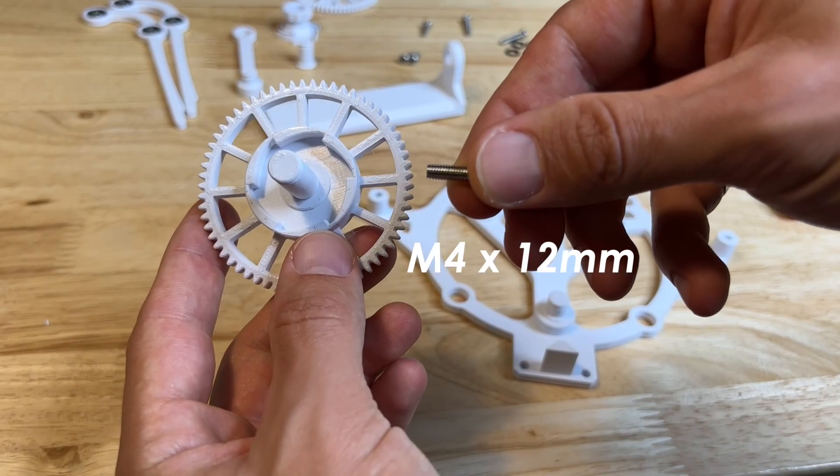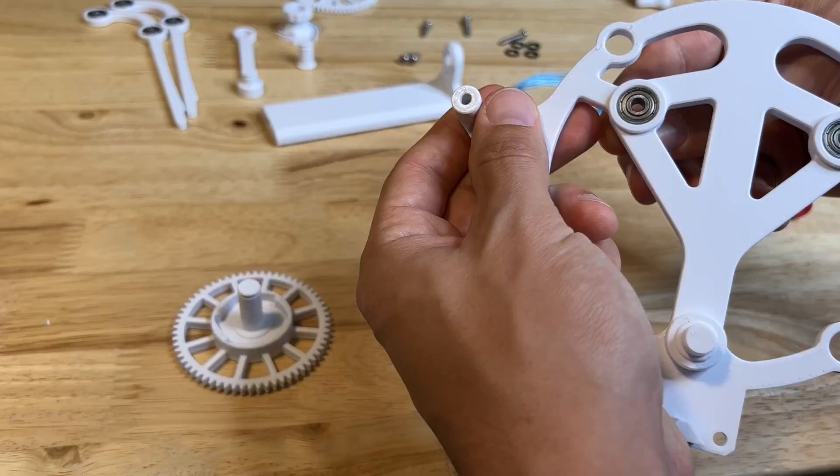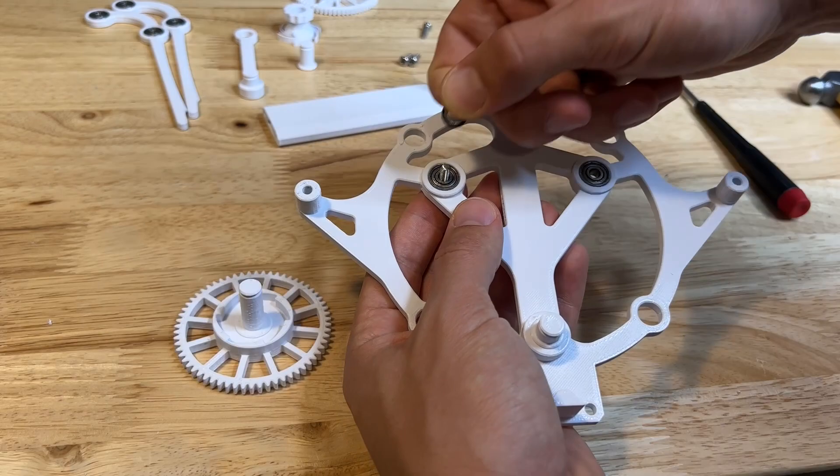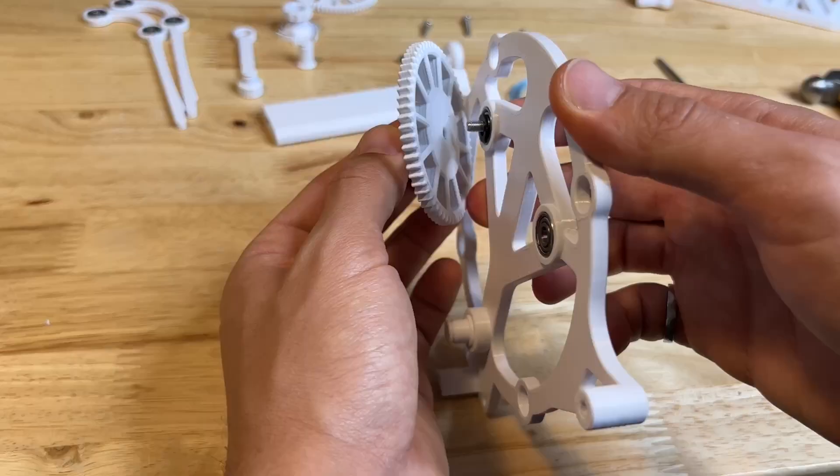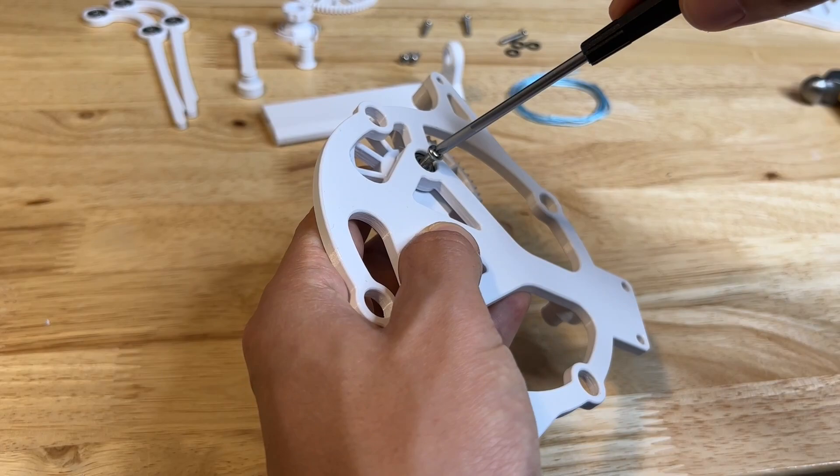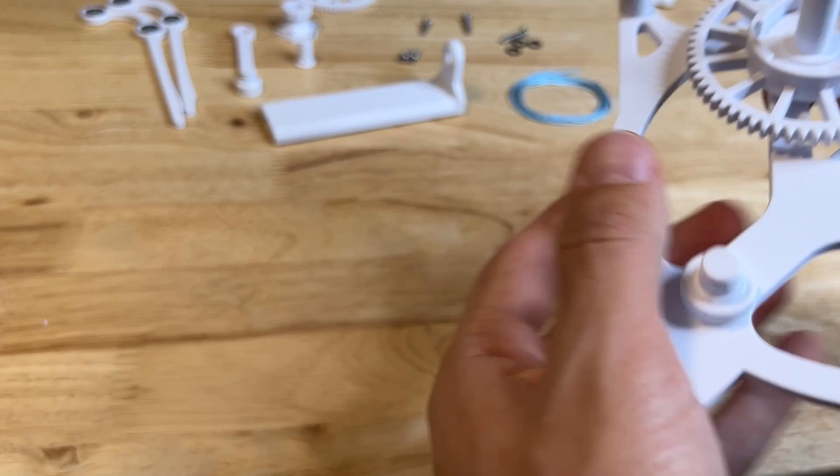Now using an M4 by 12 millimeter screw, you're going to place it into the left bearing on the base. Throw one or two washers on there, and then you're going to screw in the gear with the spool post on it. Give it a couple of spins to make sure that it's working well.